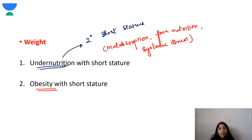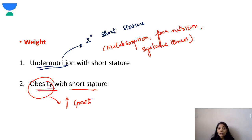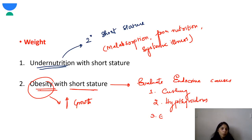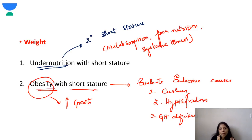Coming to obesity: obesity is associated with accelerated growth, so a child who is obese is generally tall. When a child presents with both obesity and short stature, this is contradicting and should always be evaluated for endocrine causes like Cushing syndrome, hypothyroidism, and growth hormone deficiency. An obese child with short stature should always be worked up for endocrine causes.